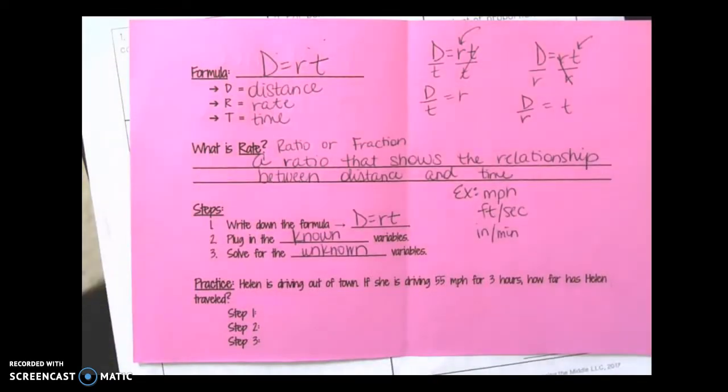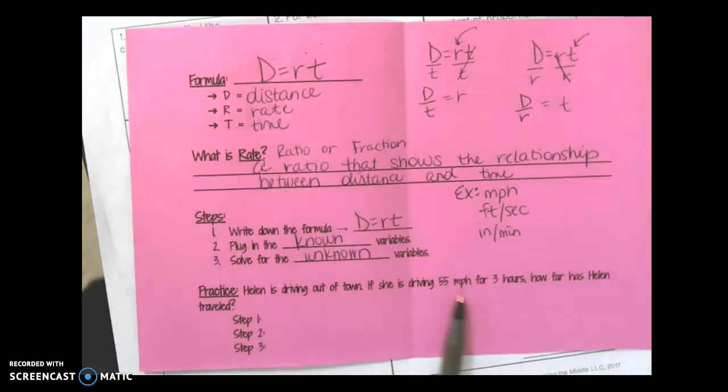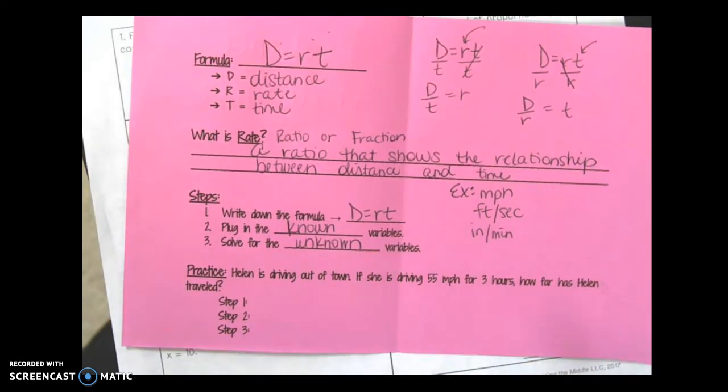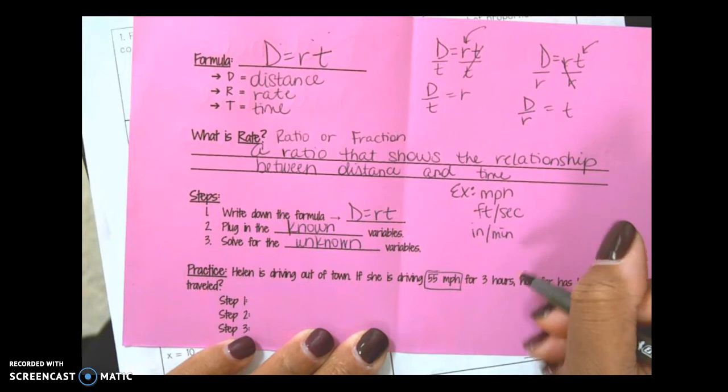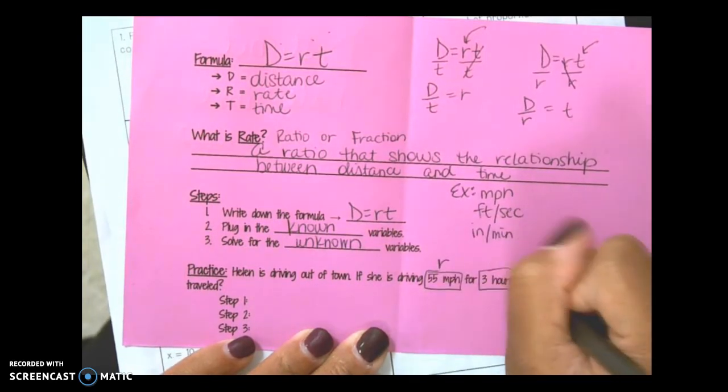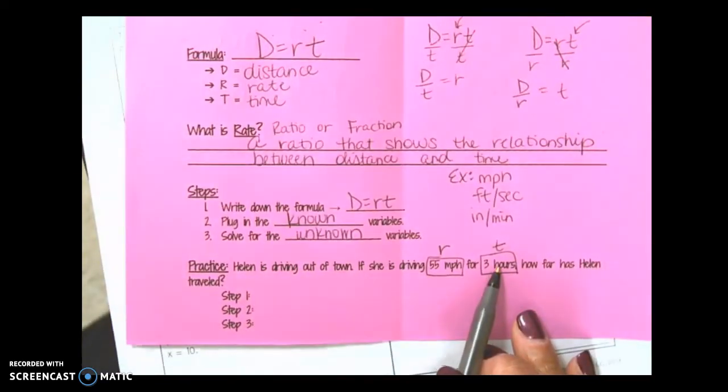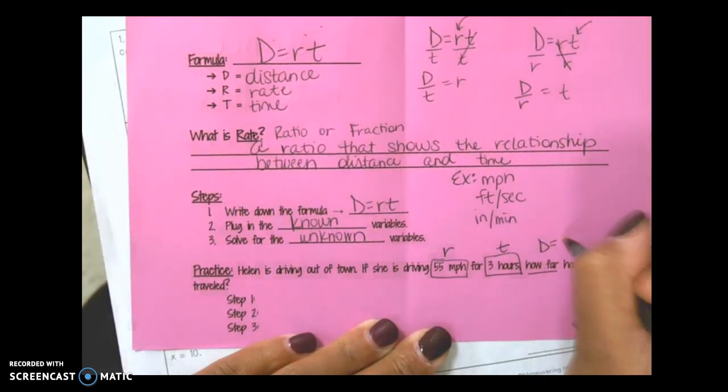Now you need to apply it in this simple D equals RT question. Helen is driving out of town and she's driving 55 miles per hour for three hours. How far has Helen traveled? She's going at a rate of 55 miles per hour. She travels for three hours. I have my R and my T and it says how far has she traveled? I need to know what D equals.